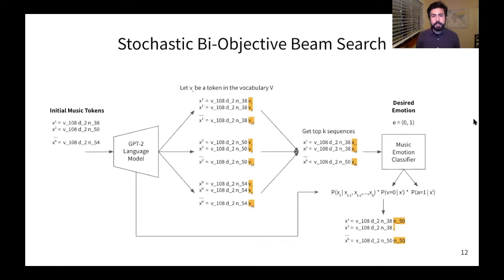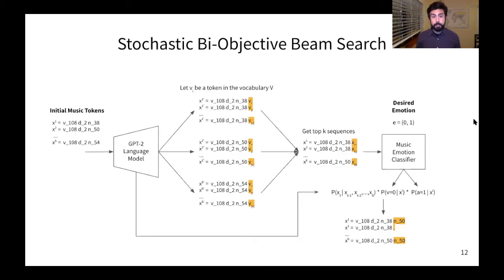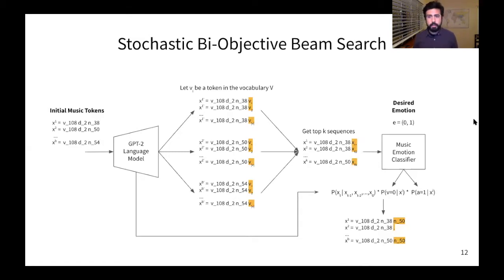This beam search is executed until we find one sequence in the beam that has length equal to the piece of speech that we are trying to generate music for. We call this algorithm stochastic because the beams are created using a stochastic approach. And we call it bi-objective because we combine the probability distribution from the language model with the distribution from the music emotion classifier.